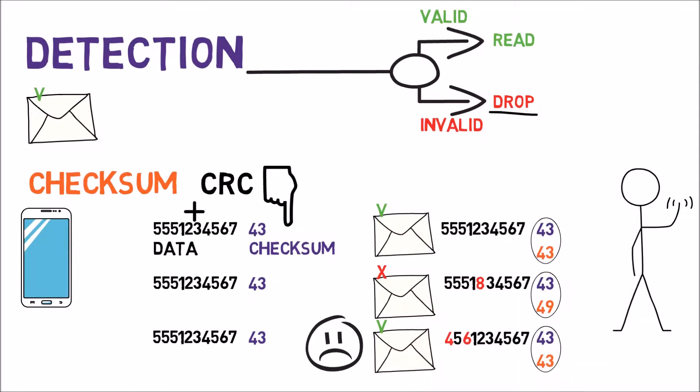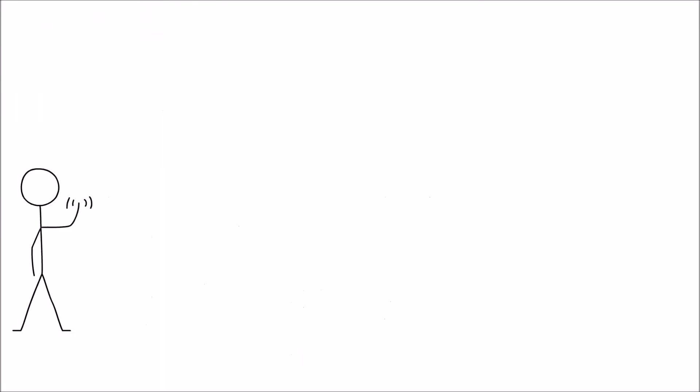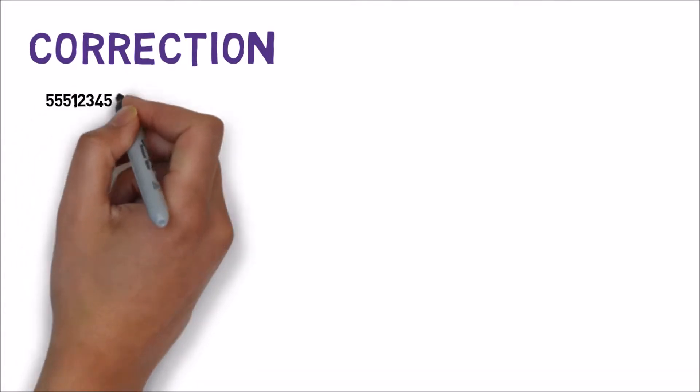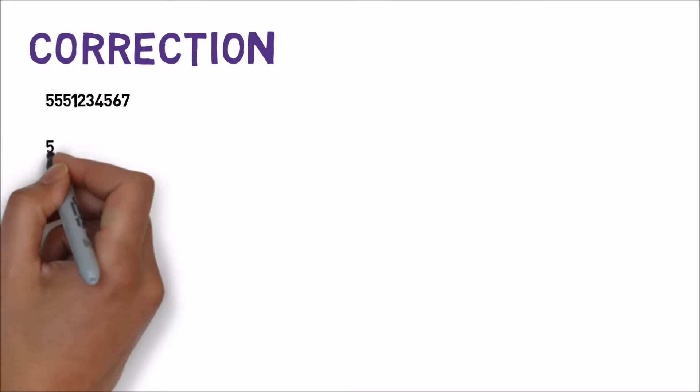As mentioned earlier, detection is not the only way to handle errors. Another approach might be to find the error and correct it. How can that be achieved? An extremely simple way would be to transmit the data many times. Let's say three times. For example, the following stream would be transmitted as follows... So we basically sent the data three times.